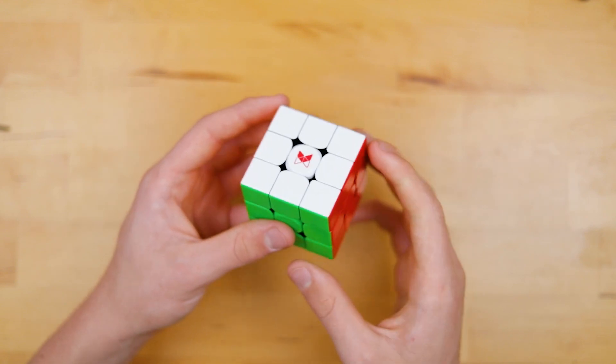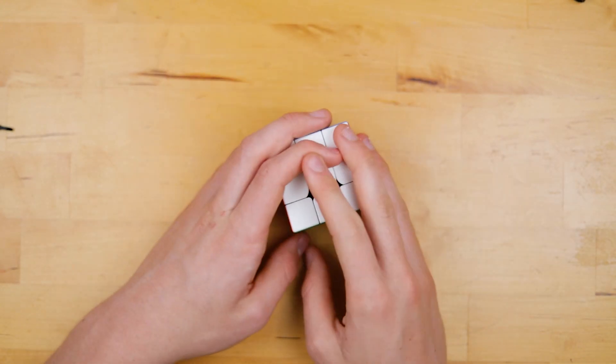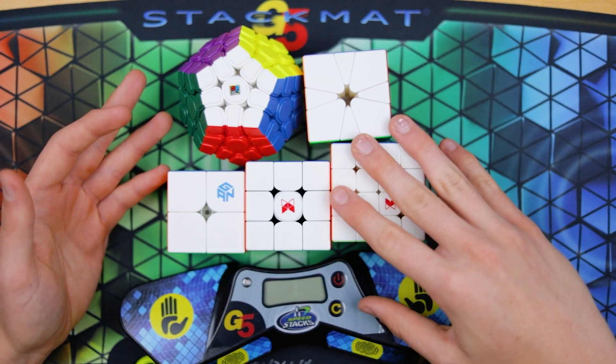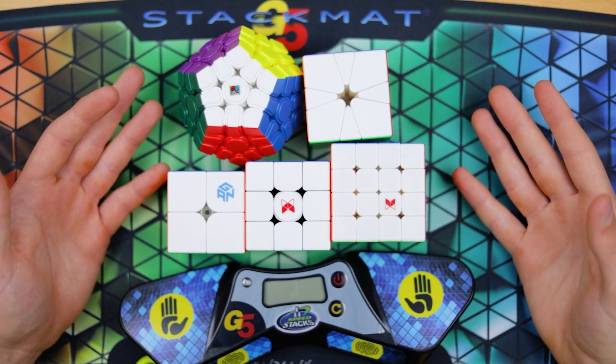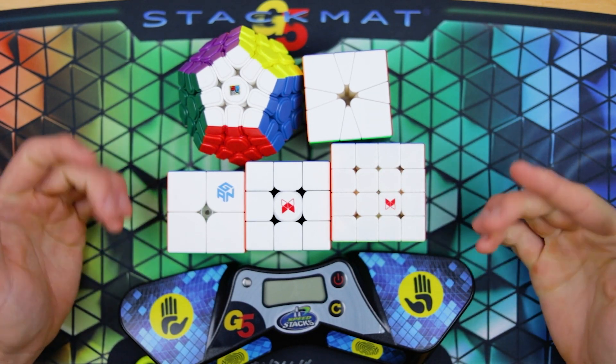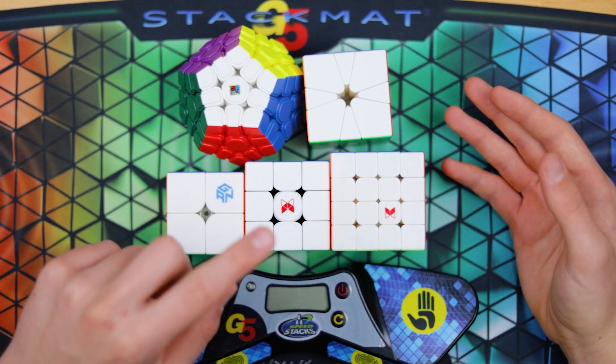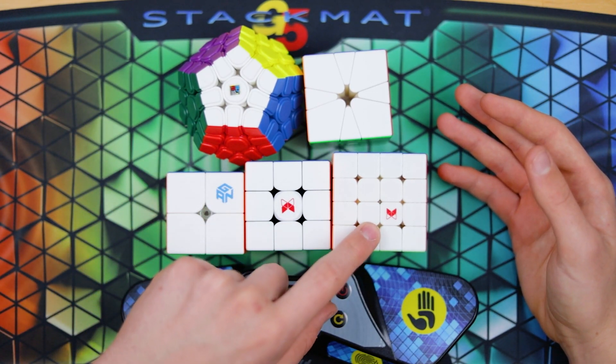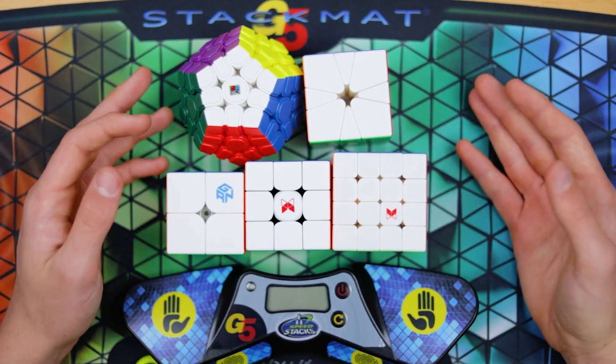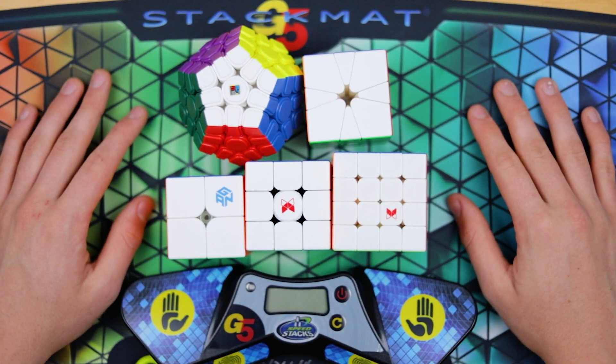So that's about it. Thank you all for watching. That's pretty much all I have to say on these cubes. Thanks again to Daily Puzzles who sent them out. Go check them out and you can buy any of these cubes with the links in the description. Other than that you can definitely expect a video on the Tornado coming soon, and possibly the Ambition, we'll have to see, and some other exciting stuff. So stay tuned and other than that I'll see you all in the next video.